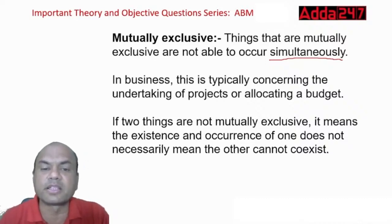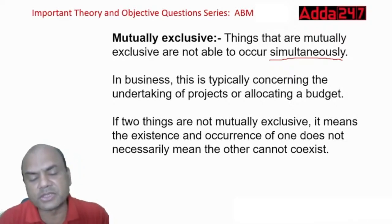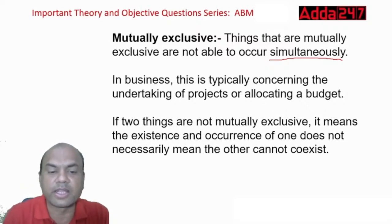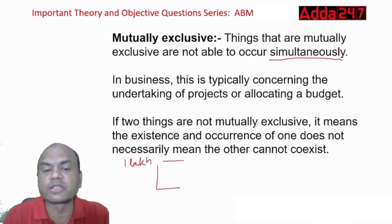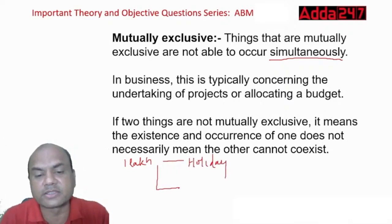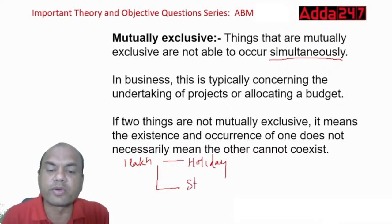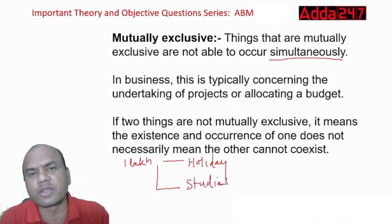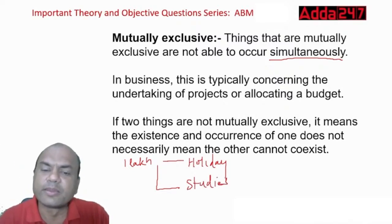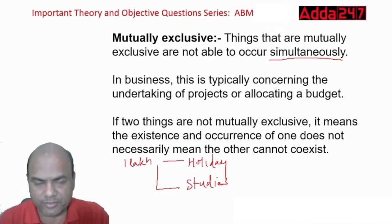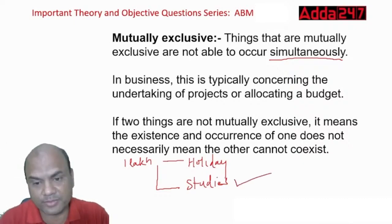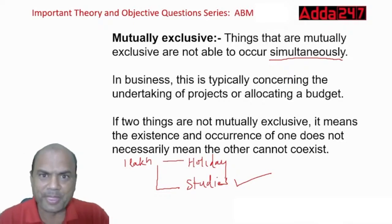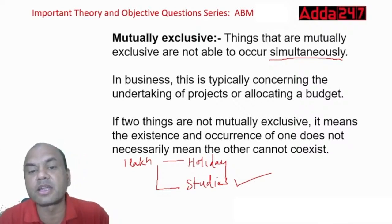In business, this is typically concerning the undertaking of projects or allocating the budget. Suppose you have one lakh rupees and you can give it to either a holiday or your studies — both things cannot happen at once. Either you can have the cake in your hand or you can eat it; both cannot happen. So this is known as mutually exclusive — you'll have to select one. In companies, the budget is limited and projects are many.